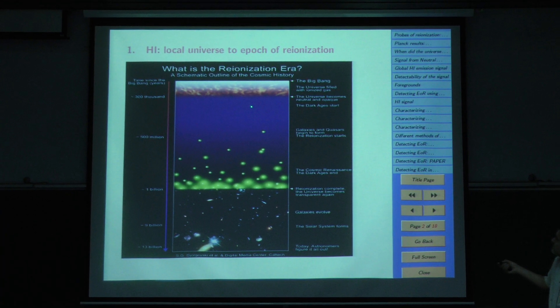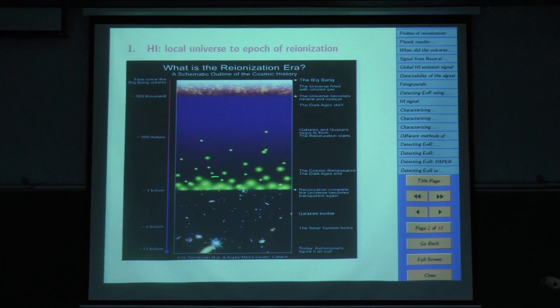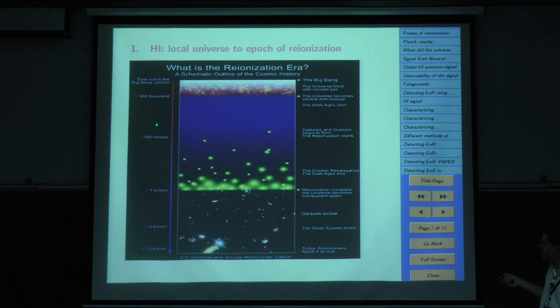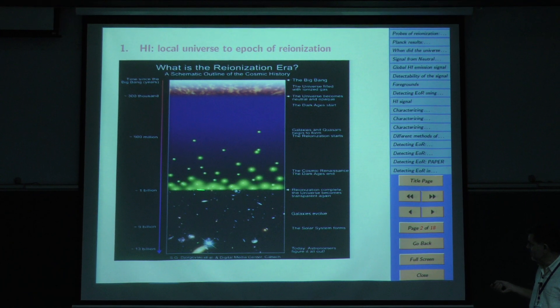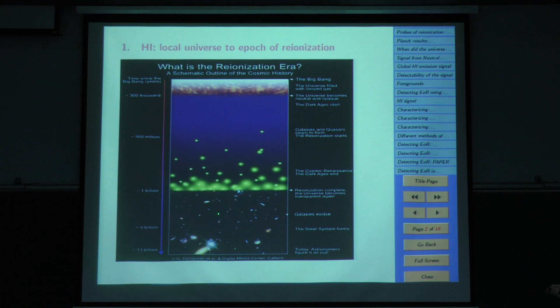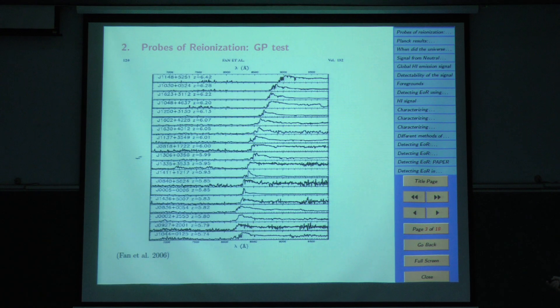So here is a cartoon of the evolution of the universe. This is Big Bang, 300,000 years. This is where the CMB is born. After that, this era is called Dark Ages. And then starts the era we call epoch of reionization, which probably commences when the universe was close to 500 million years old and finishes around a billion years old.